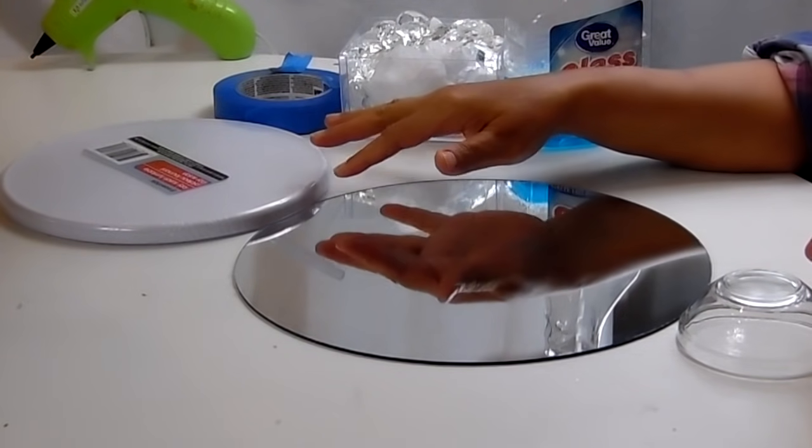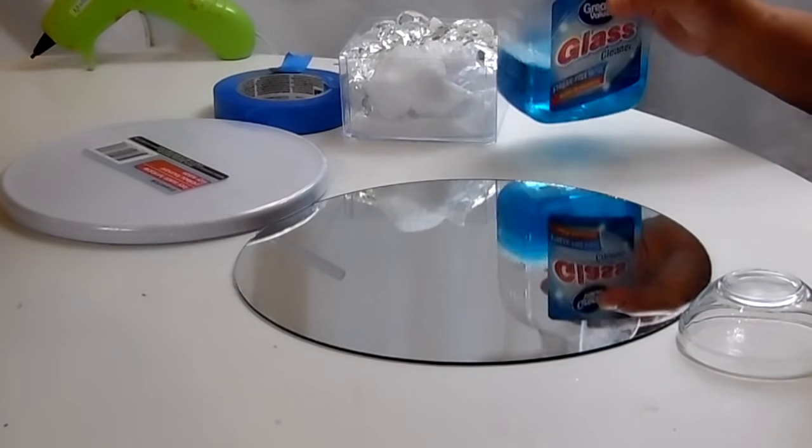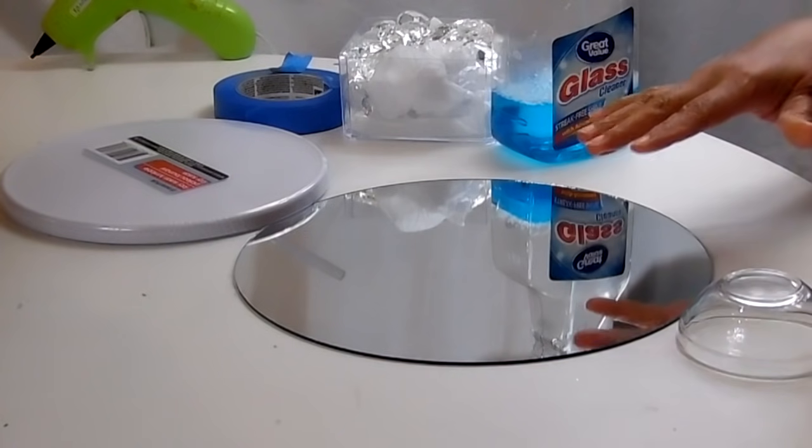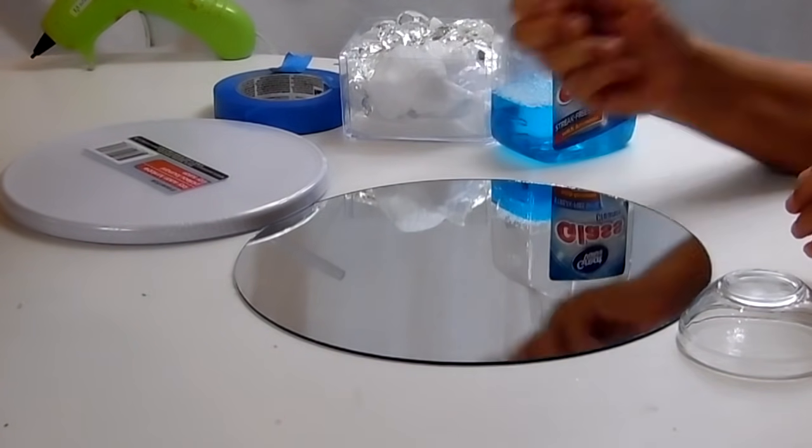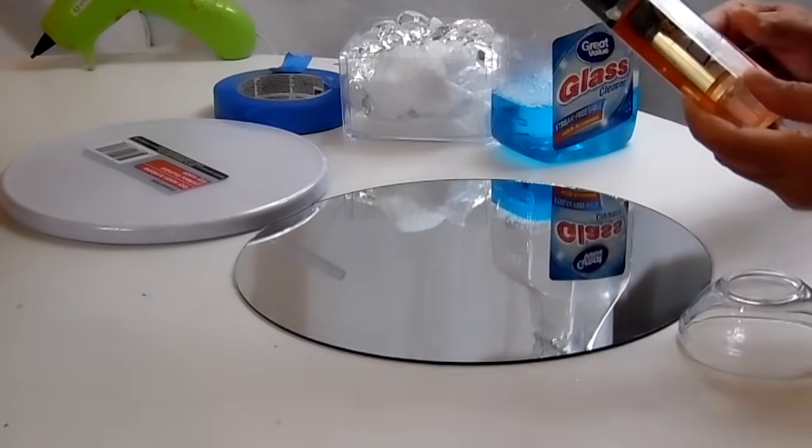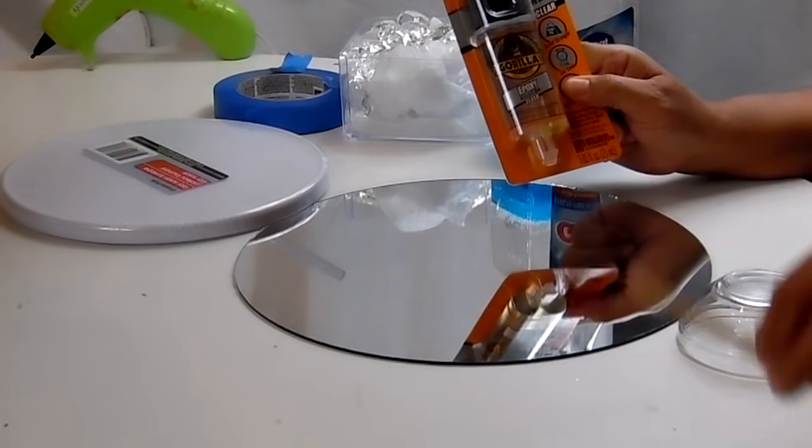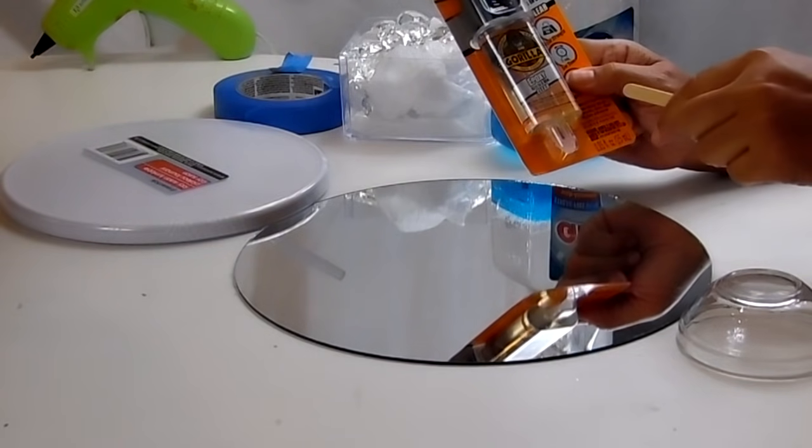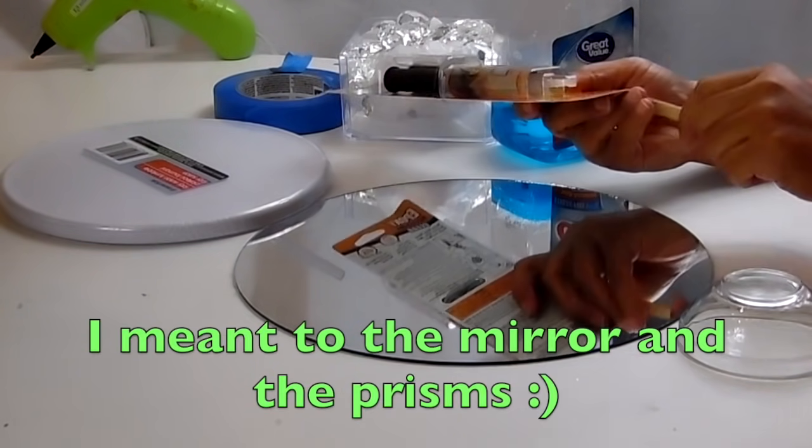I'm going to spray paint the outside silver and put some bling around it. I got some glass cleaner here to keep my mirror clean and to clean my chandelier pieces. I have my glue gun ready, and I'm going to be using some of this Gorilla Epoxy with this project. I have a popsicle stick to help me apply the glue to the tray and to the prisms.